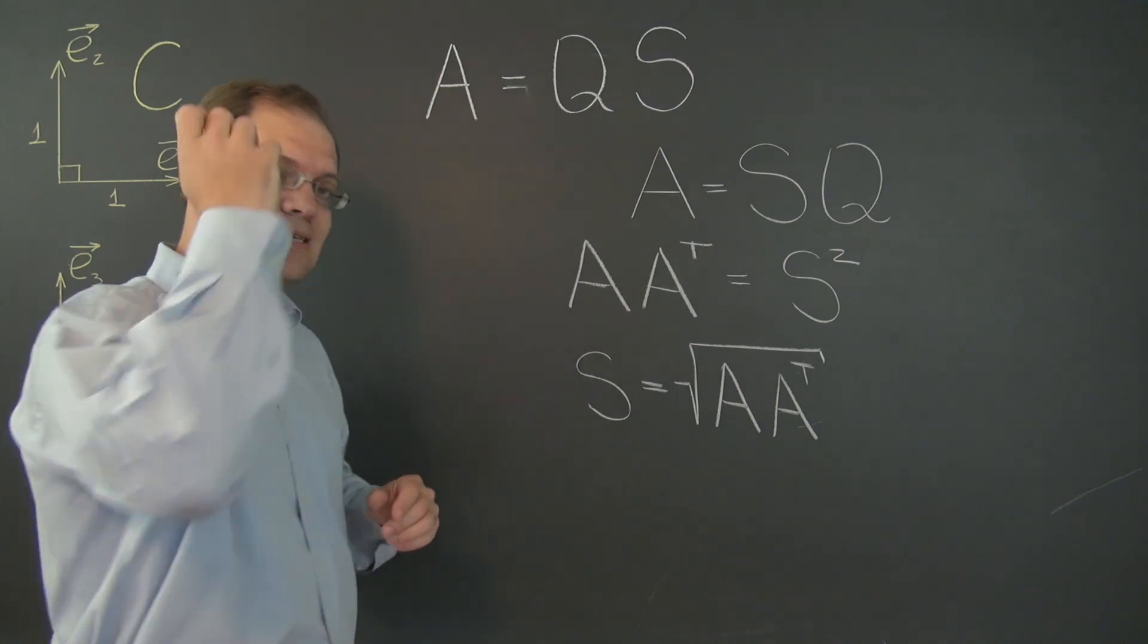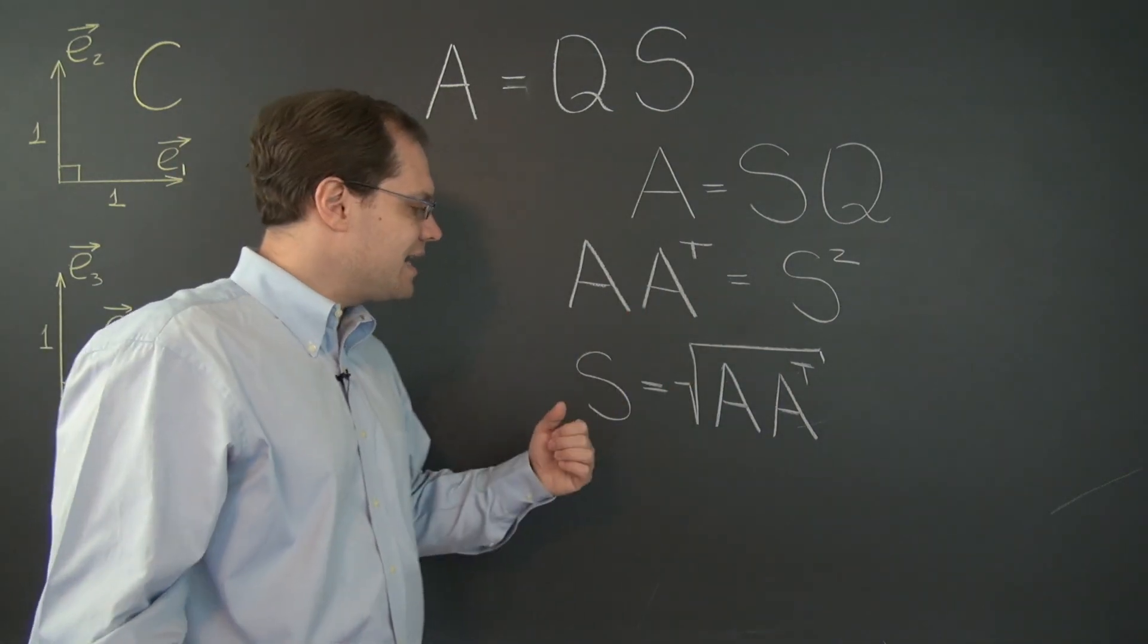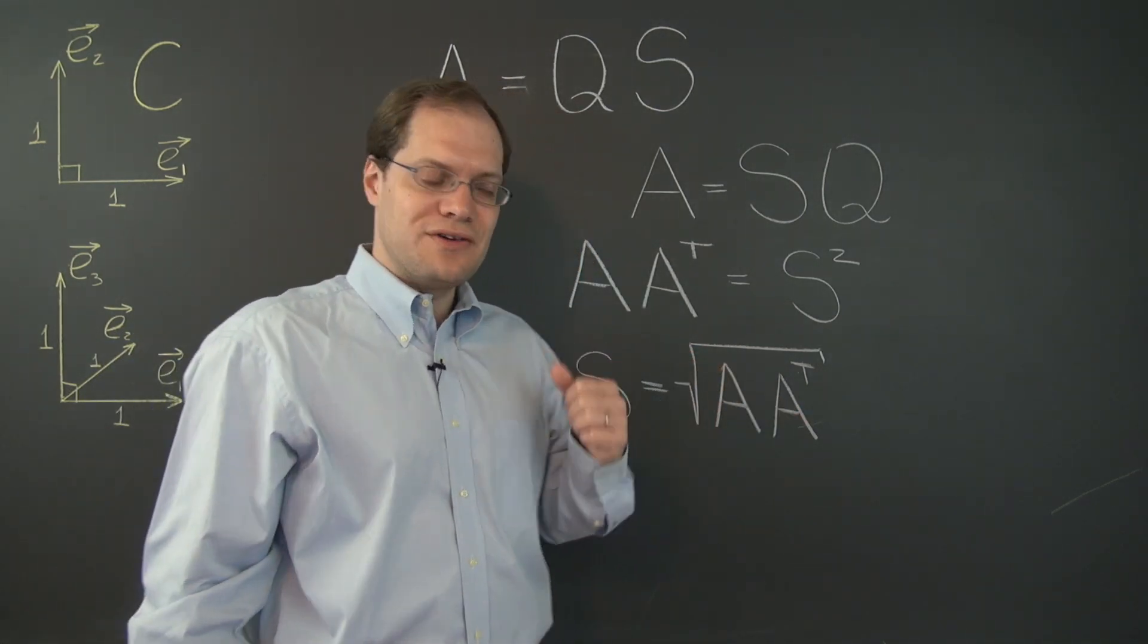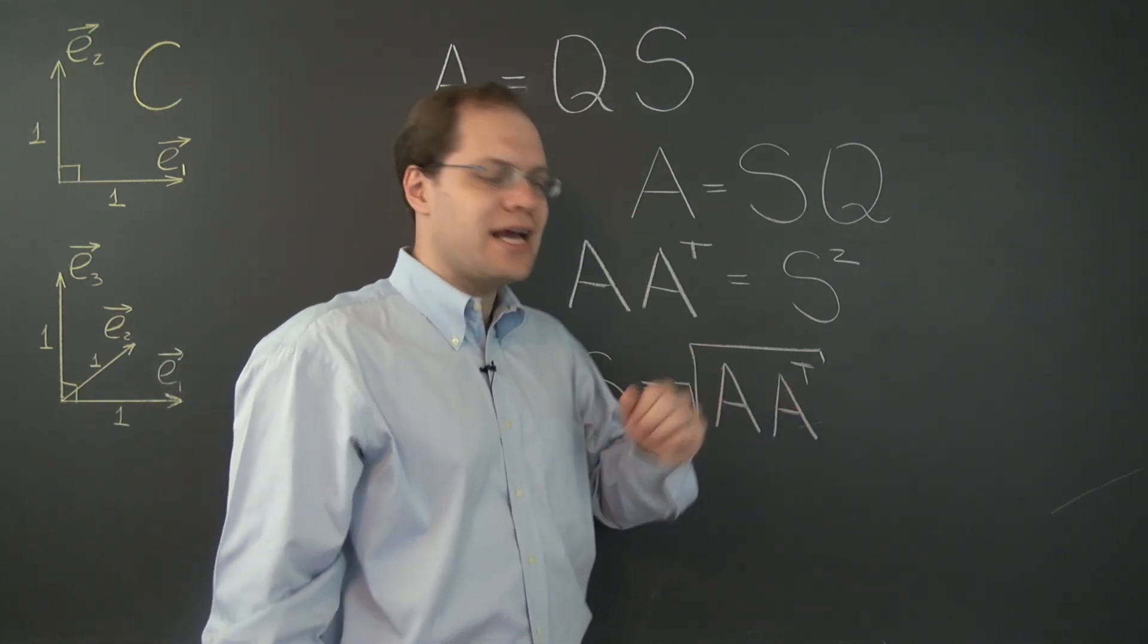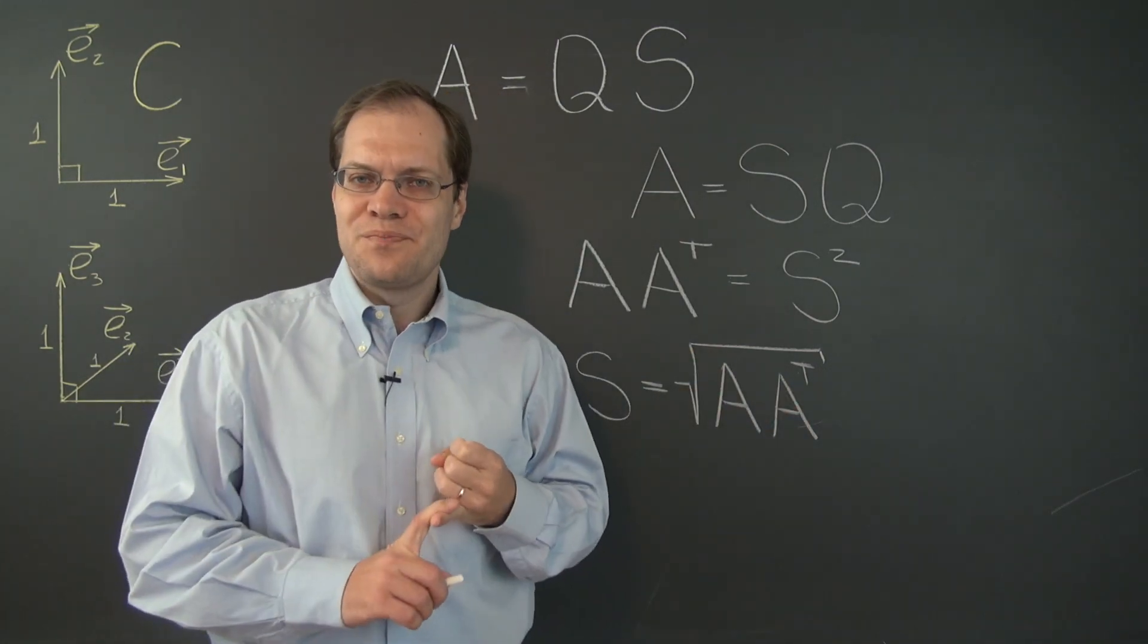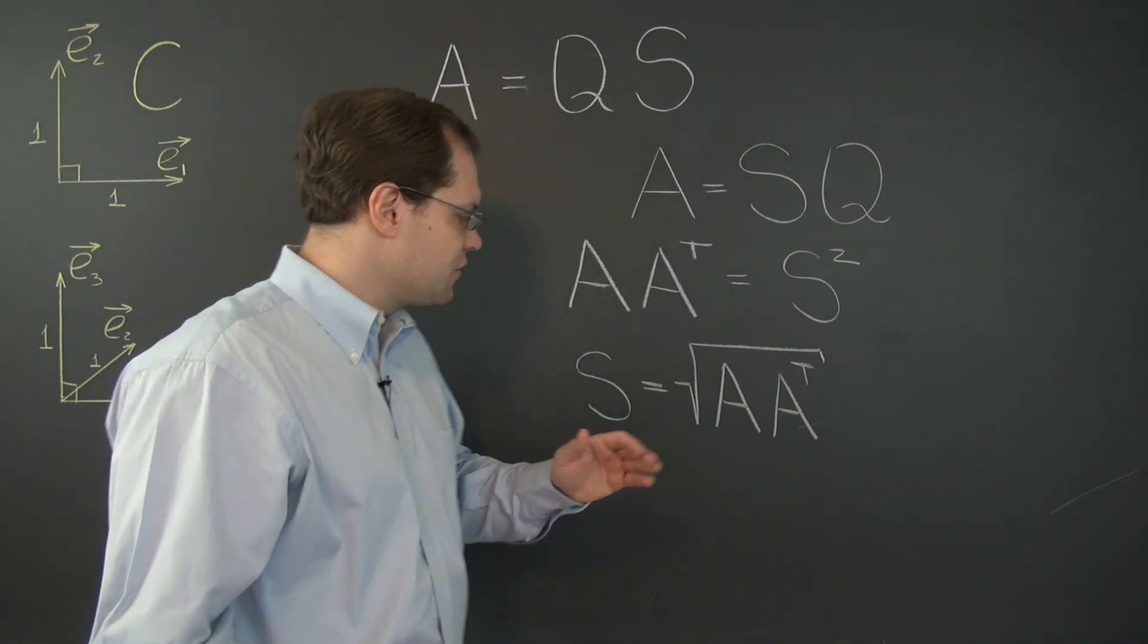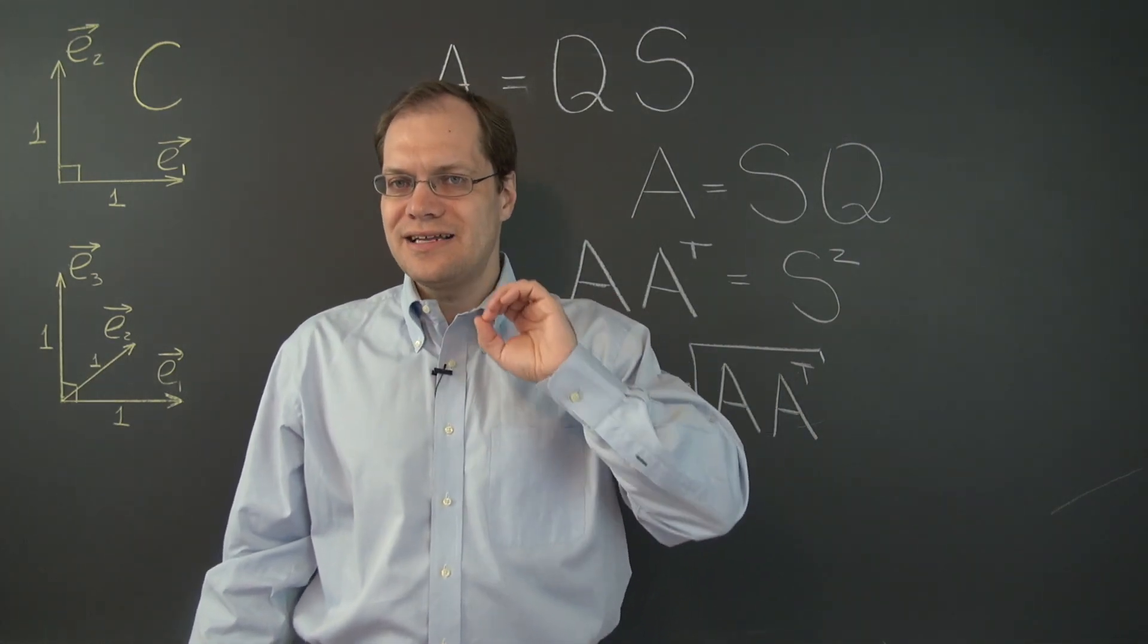And all of the nice things I said about the matrix A transpose A previously I can now say about the matrix A A transpose. It's symmetric, all of its eigenvalues are real and actually all of them are positive. So the square root is a very cleanly uniquely defined object.